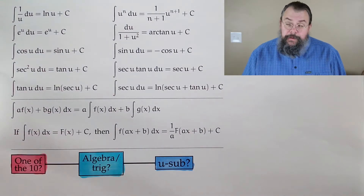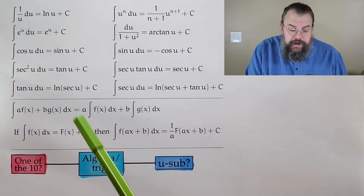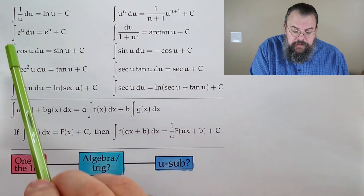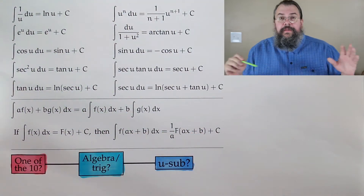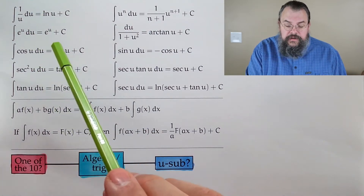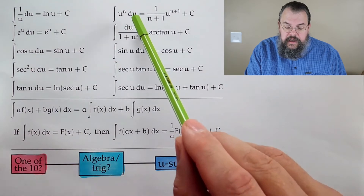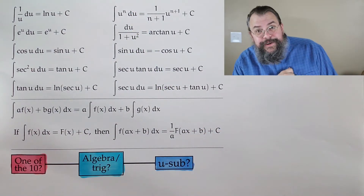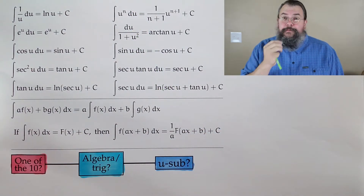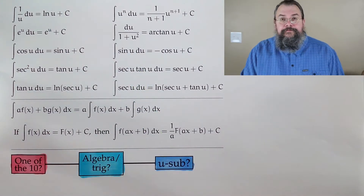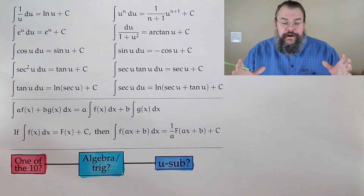So where are we? What do we know? Well, there are 10 integrals that we can do, and these 10 we should just know by heart. Things like 1 over u, e to the u, cosine u, secant squared, tangent, u to the n, 1 over 1 plus u squared — another personal favorite of mine, arc tangent — sine, secant tangent, and secant. These are our basics.